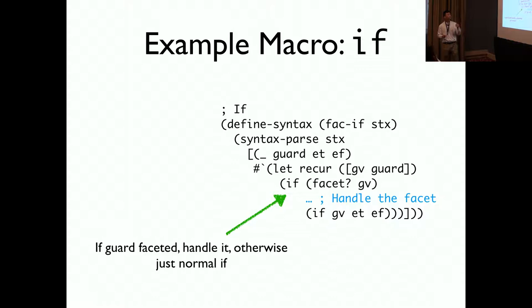To give some intuition about how RACIS is implemented, we have an example, the if macro implementation. As you can see, we use syntax parse, one of the Racket macros to implement the if. And we parse the statement into guard, true expression, false expression. We first check if guard is faceted or not. If it is, we'll handle it differently. Otherwise, we treat it as a normal if.